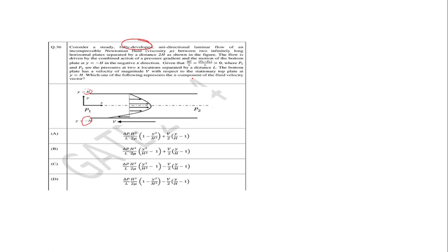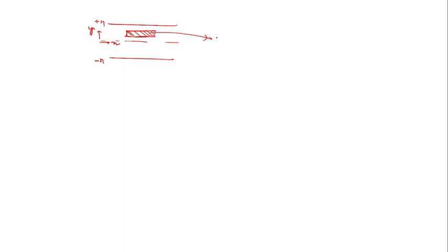Starting from the basics: here is a plate at y equal to plus h, the y-axis, and the x-axis, with the origin at center. Here it is at minus h, and the gap is 2h. We consider a small differential element of the fluid between the parallel plates. This differential element has length dx, width w, and thickness dy, with y and x axes defined.